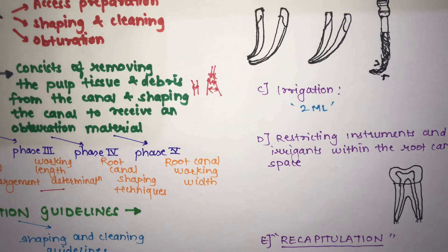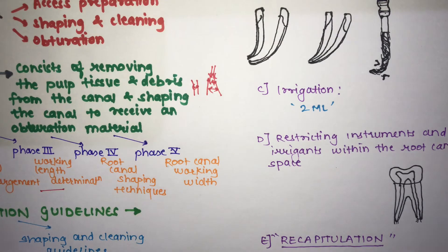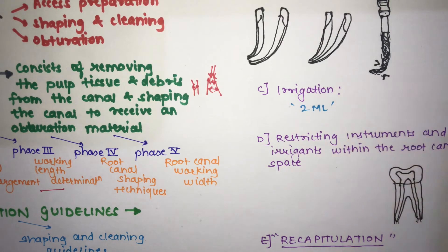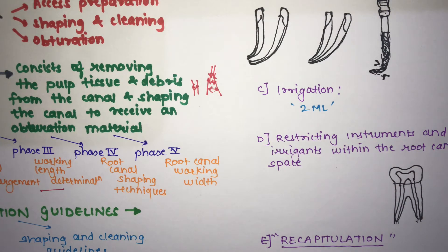The third guideline is irrigation. Irrespective of the instrumentation motion, frequent irrigation of the root canal facilitates instrumentation, debrides the canal, and helps disinfect it. You must irrigate each time before proceeding to the next step or when changing to a larger instrument. Ideally, 2ml of irrigant per canal per instrument change is clinically recommended.